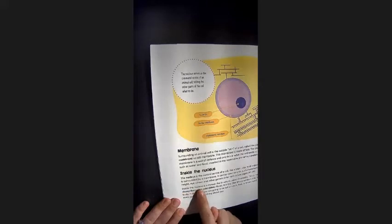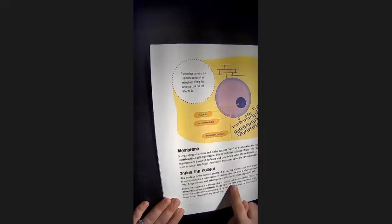Inside the nucleus is a thread-like structure called chromatin. This is made up of deoxyribonucleic acid, DNA, fibers. It is the DNA that provides a map of your body.